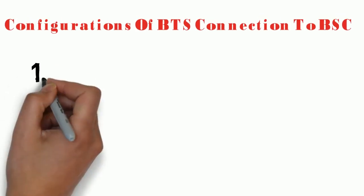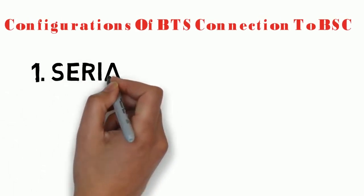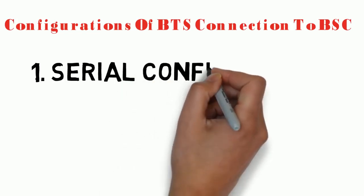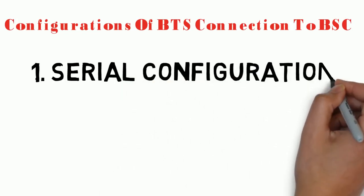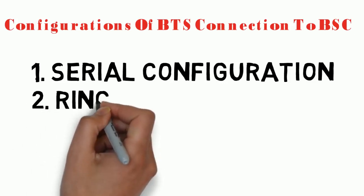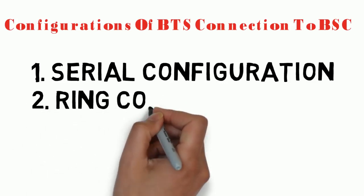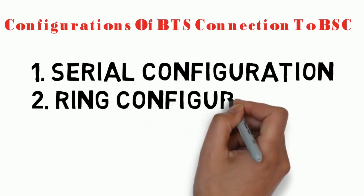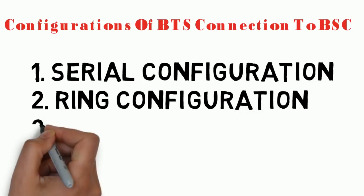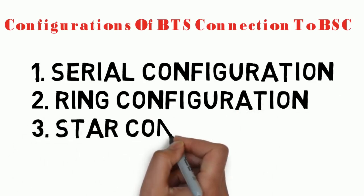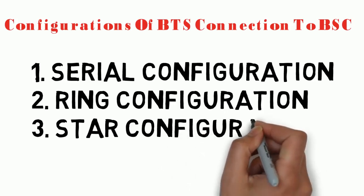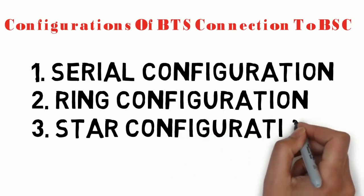When we talk about the connections between the base stations and the BSCs, there are three possible types of configurations. One is the serial configuration, the second one is the ring configuration, and the third one is the star configuration. Each of these configurations has certain advantages and disadvantages as we will discuss later on.